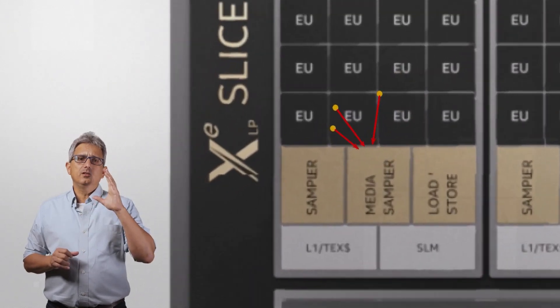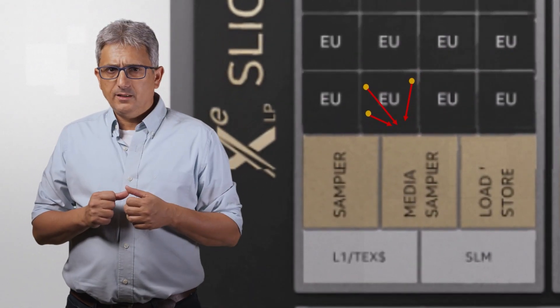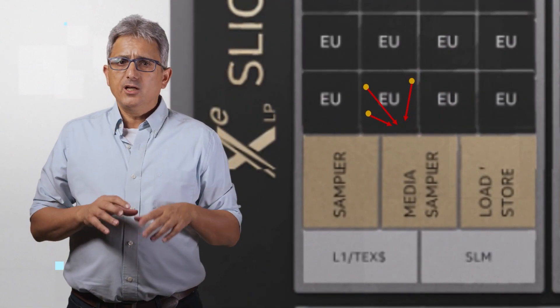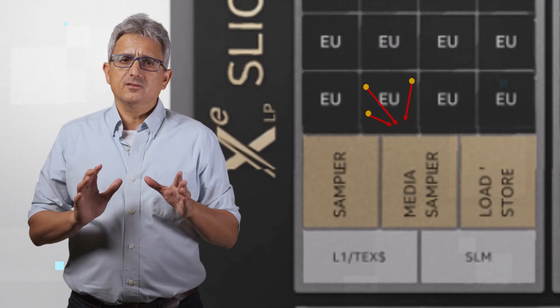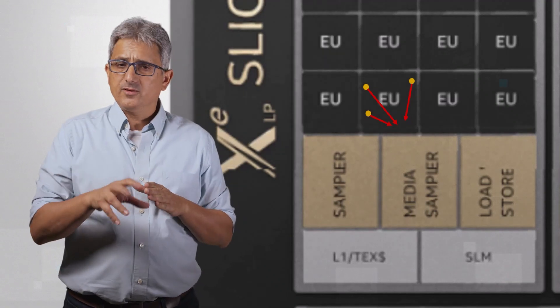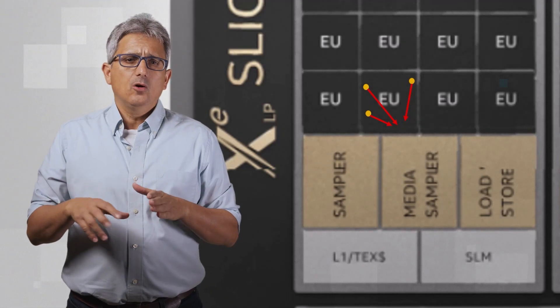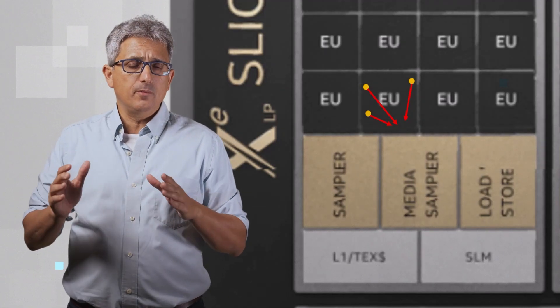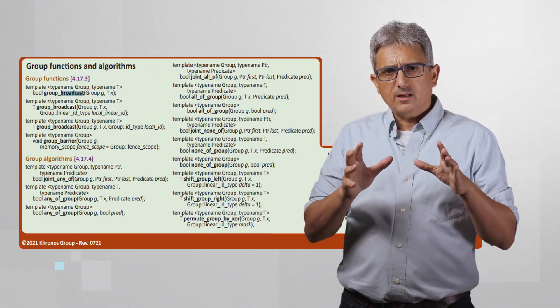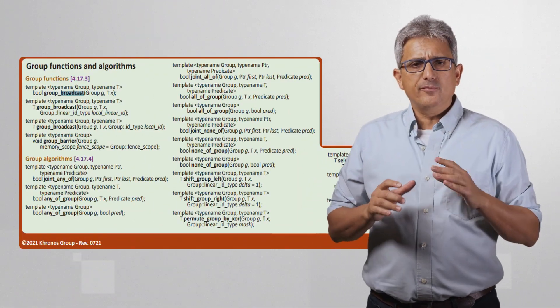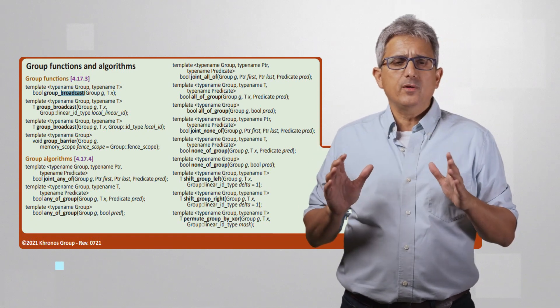Which is great, but we can do even more. Work items running on the same EU can communicate via registers and utilize some of the hardware inside of the same EU to perform all kinds of operations between them, locally and faster. So all the work items in a subgroup can perform all kinds of shuffle operations between them.